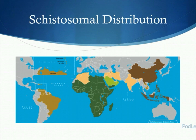Looking at this on the map, the green regions in Africa show where urinary and mansoni affect people. The peach colour is purely where urinary affects, and the brown regions are where intestinal mansoni effects occur. As you can see, virtually every country in Africa is unfortunately affected by the condition.